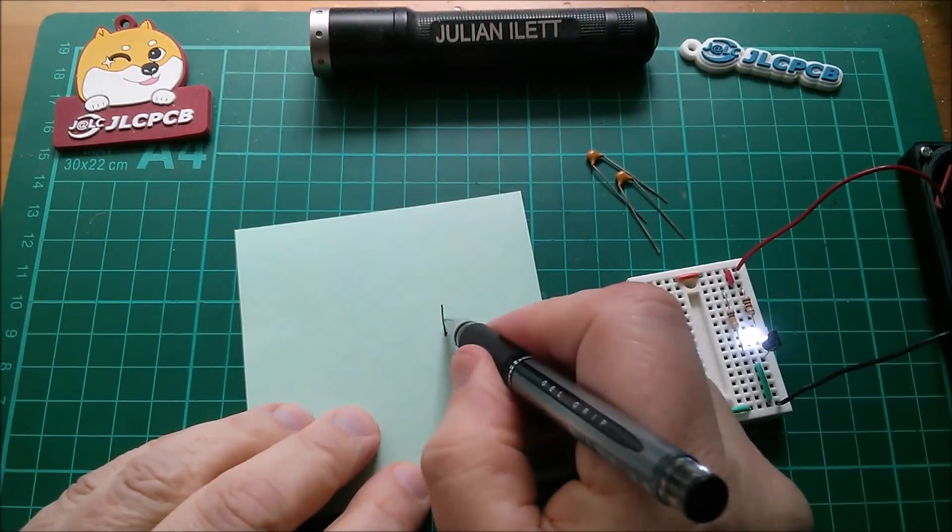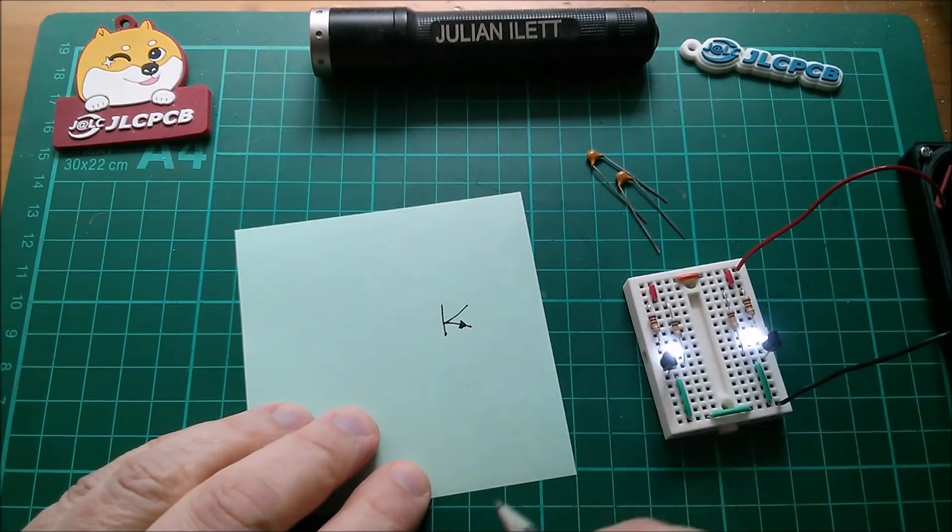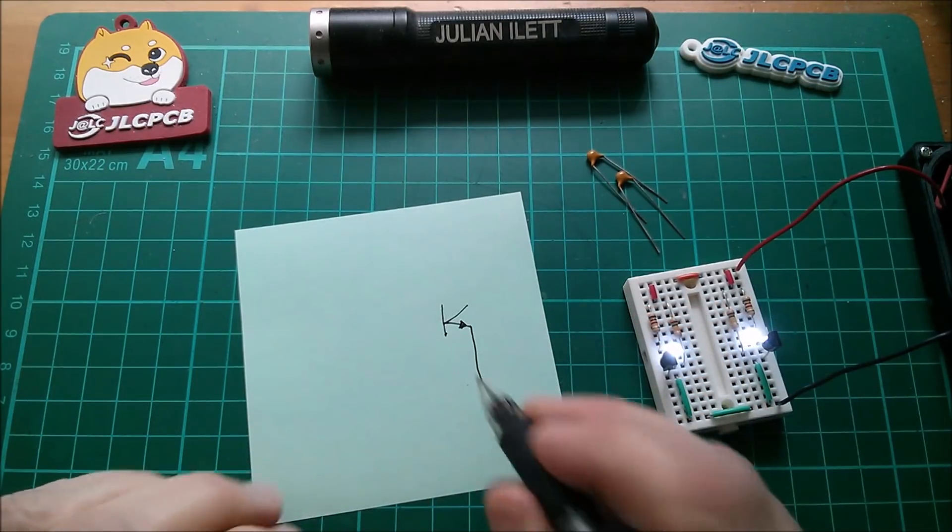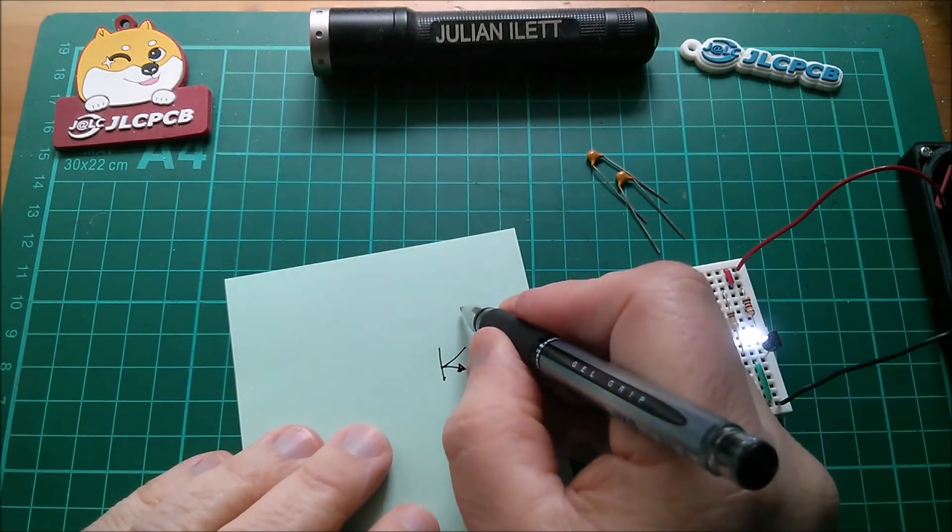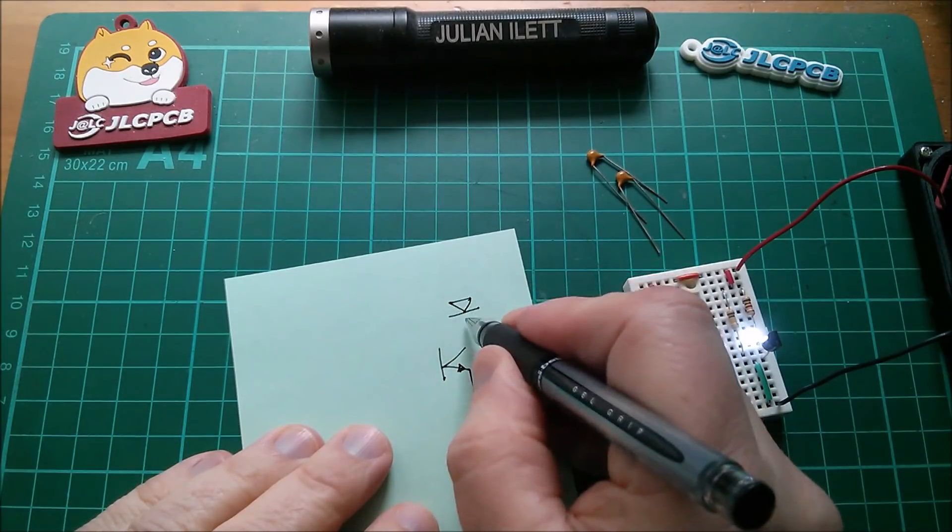So NPN transistor, arrow pointing away from the base, that goes to ground. I've not really left myself much room for this because I've got two components up here. One is the LED, which is there, that goes to the transistor collector.